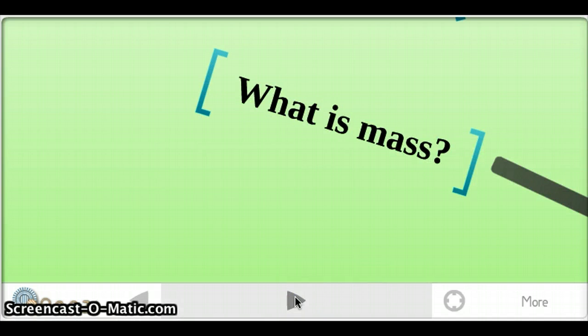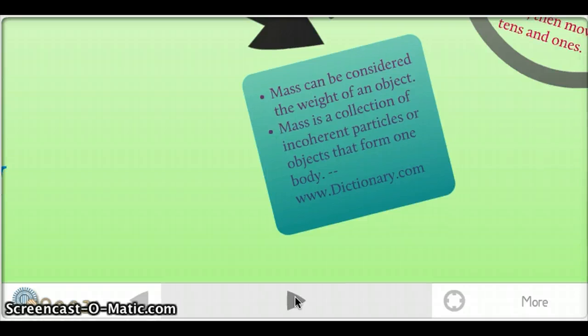What is mass? Mass can be considered the weight of an object. Mass is a collection of incoherent particles or objects that form one body.